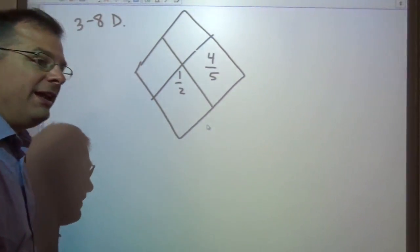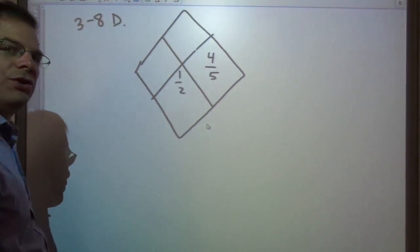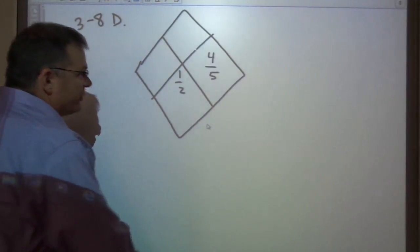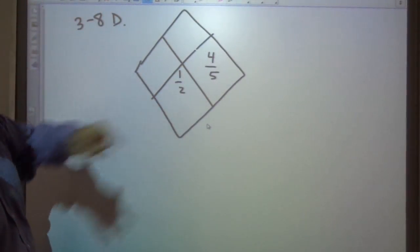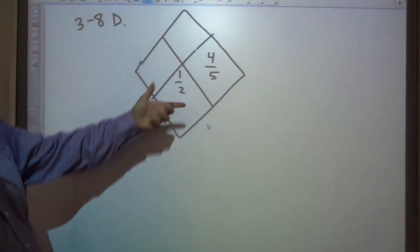Hello and welcome to problem 3-8 part D. This is a little tricky diamond problem because we're trying to find what would you need to add to 4/5ths to give you 1 half, or subtract, add or subtract.